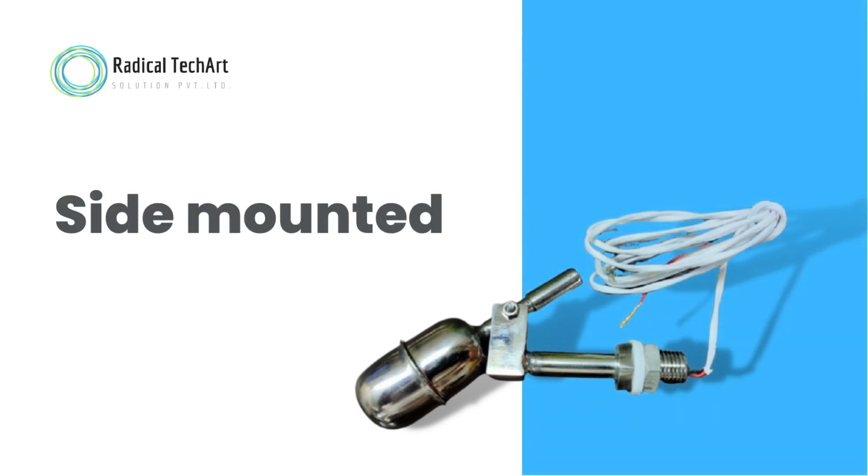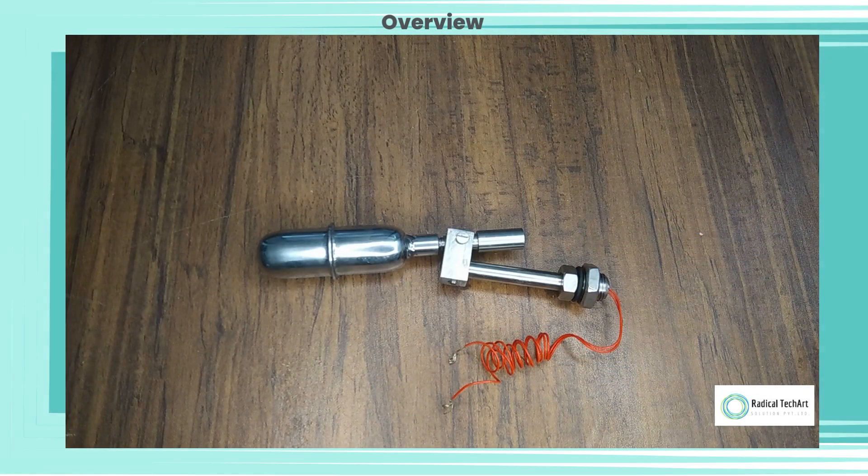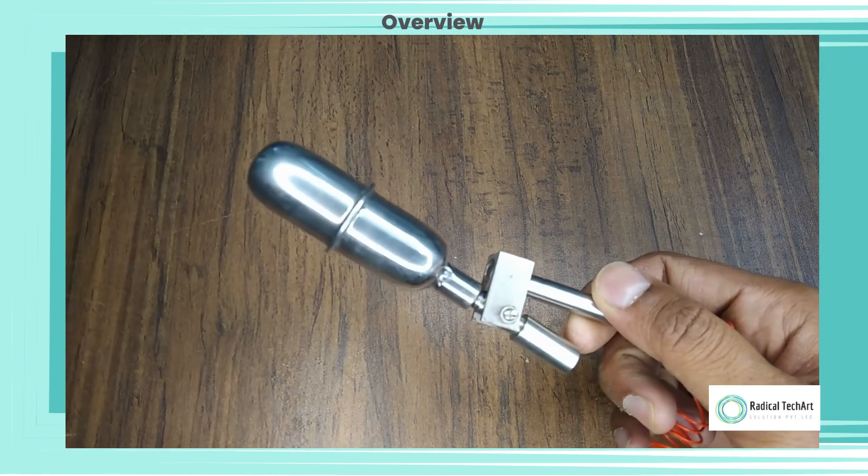Side-mounted level switches are devices used to detect the level of liquid in a tank or vessel. They are installed on the side of the tank and can be used to trigger alarms, control valves, or turn on or off pumps when the liquid level reaches a certain point.